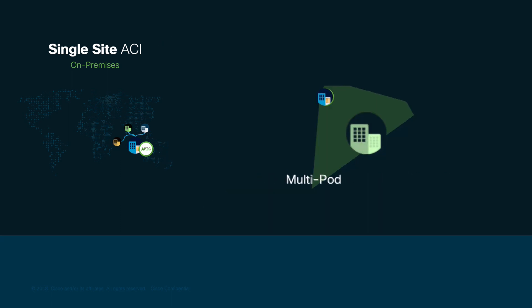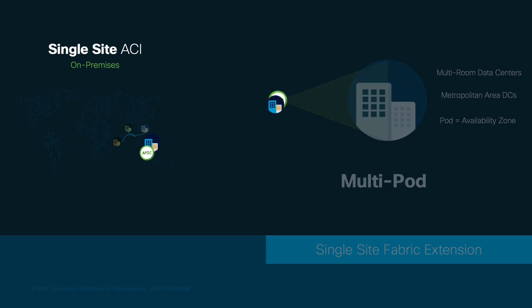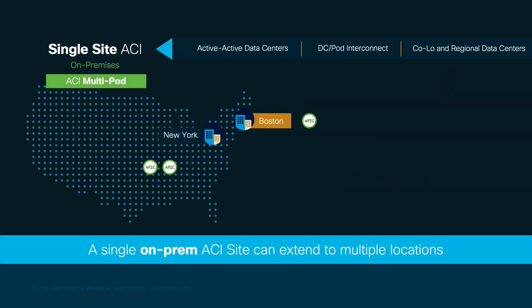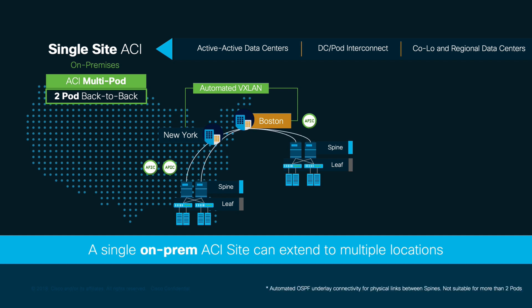Let's now take a deeper look into multipod. Multipod is useful when we have different rooms separated by an L3 domain or different locations close to each other. Think of each pod as an availability zone. In this example, our data centers are located in New York and Boston. Through ACI and multipod, the same APIC cluster can manage both locations and automate VXLAN between them. If we only have two locations and have no plans to add further sites, we could simply cable our spines back-to-back, and ACI would automate an OSPF underlay and a VXLAN overlay between them, without the need to worry about MTU or DHCP relay configurations on intermediate external devices.